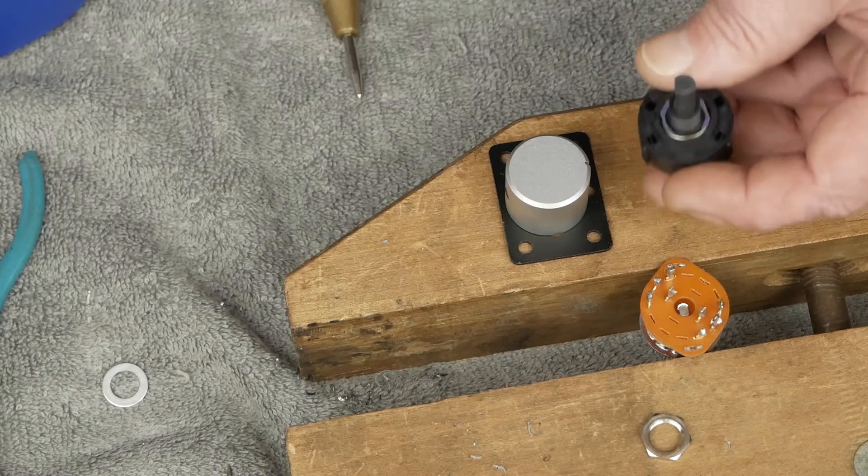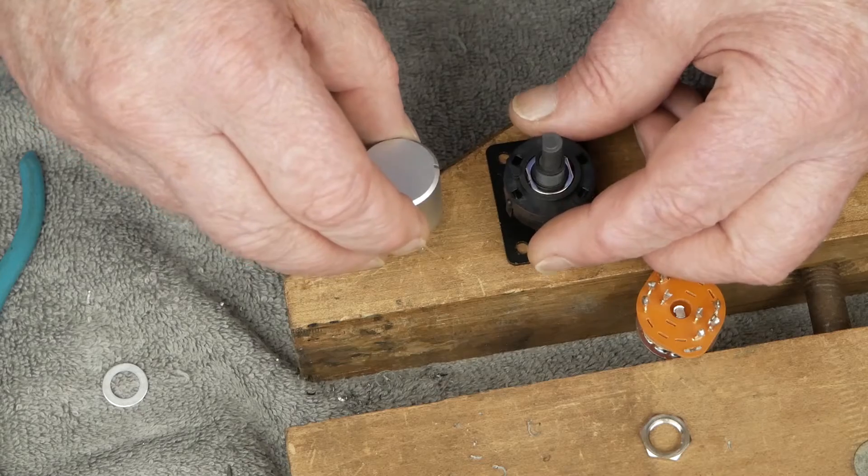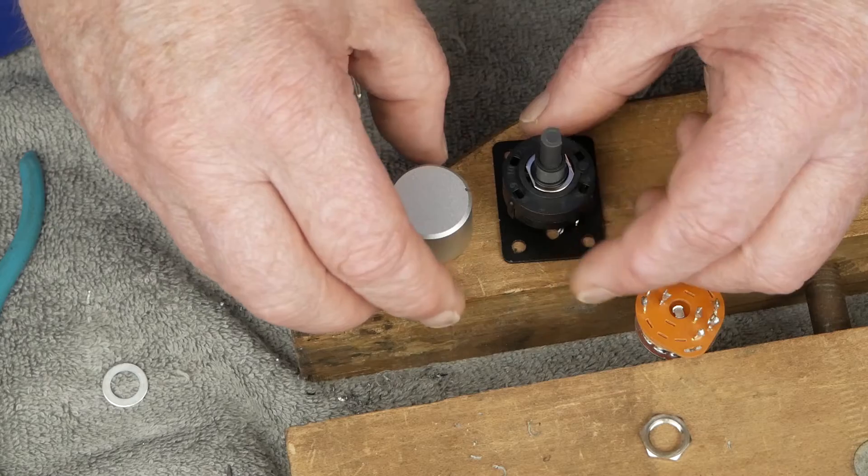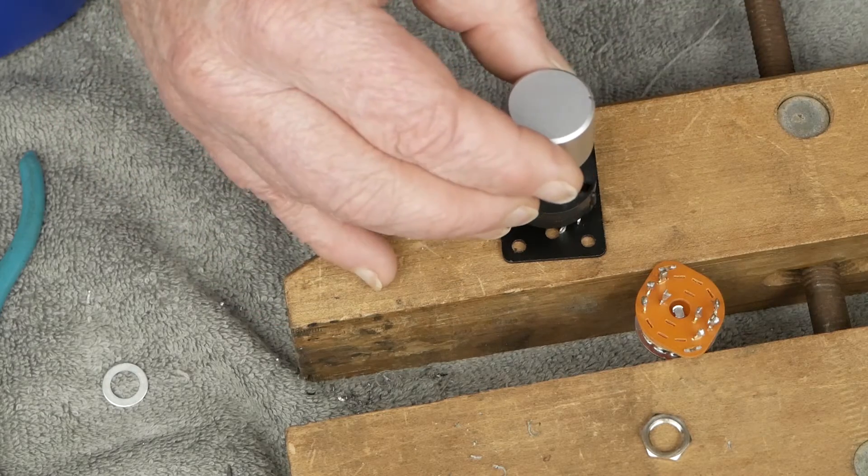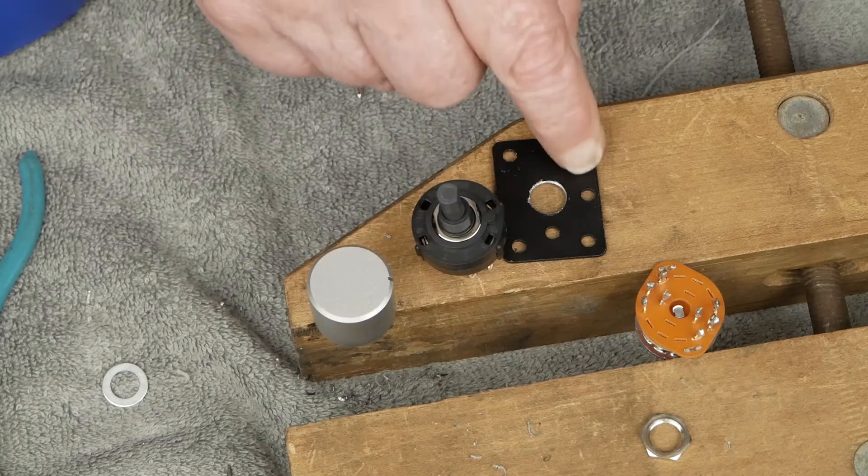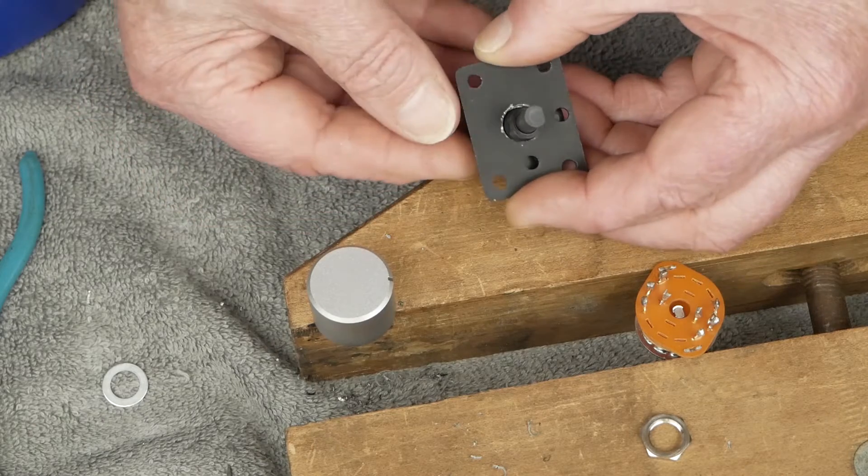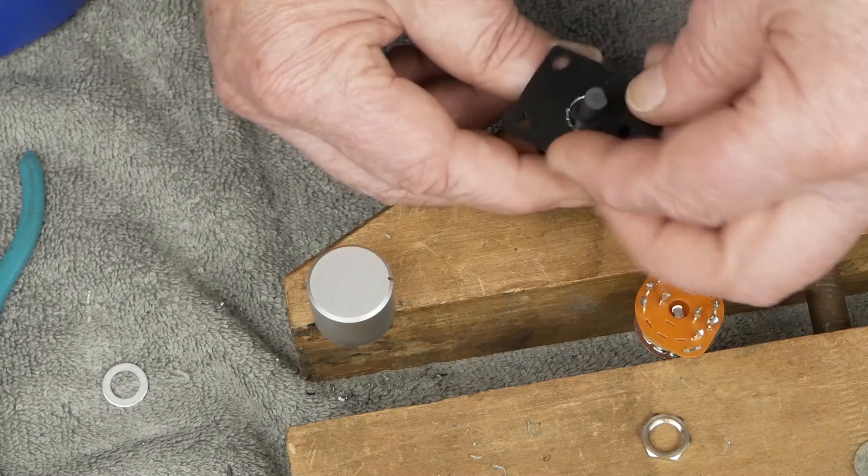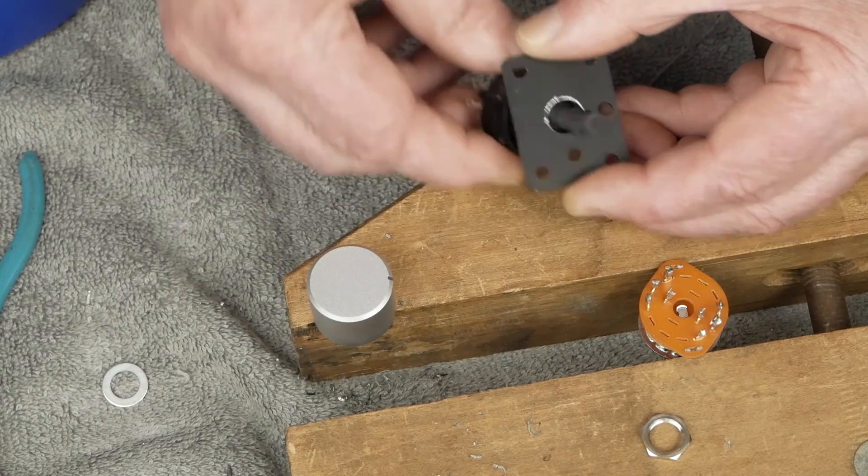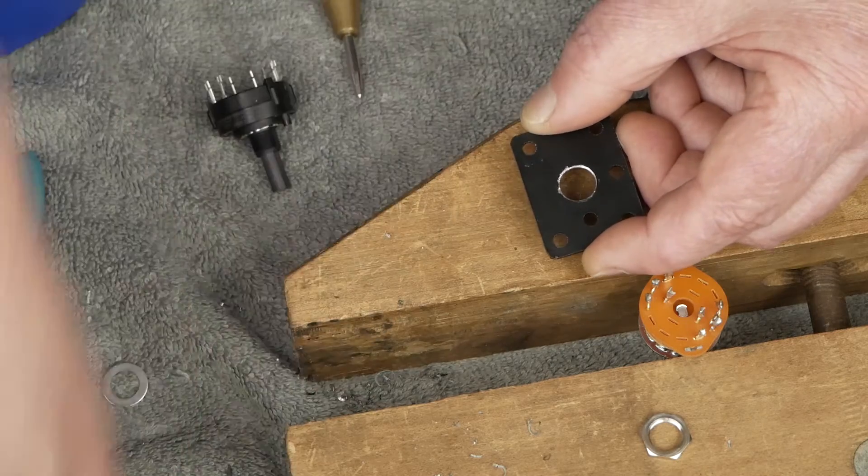You need to look at the top of the amplifier and make sure that you're indexing this switch so the mark is straight across when the switch is in the correct position. In this case we want to make sure it's all the way to the left. You can see there's already a hole here but it's not in quite the right place. It's off just a little bit.